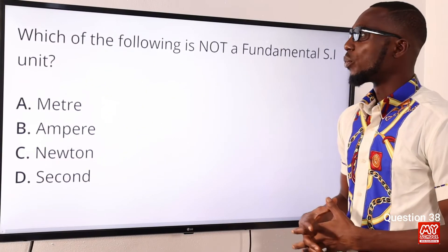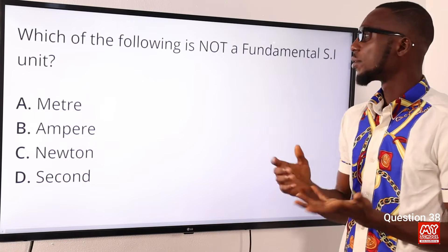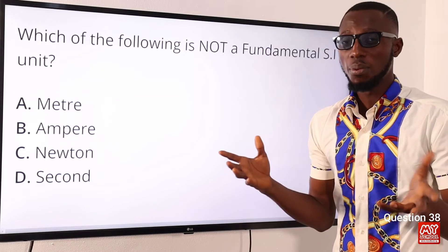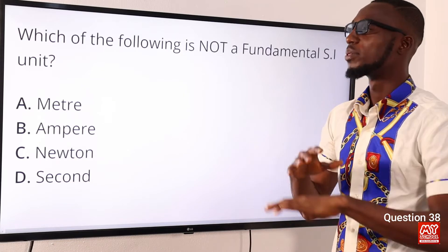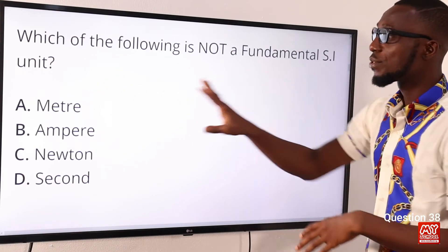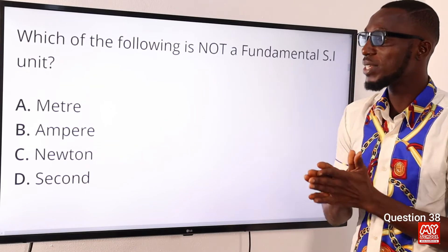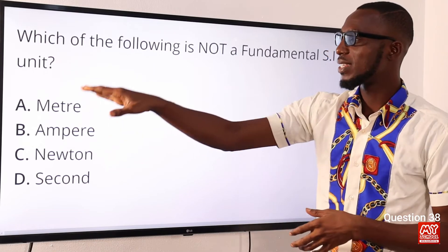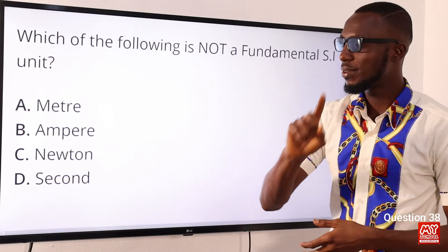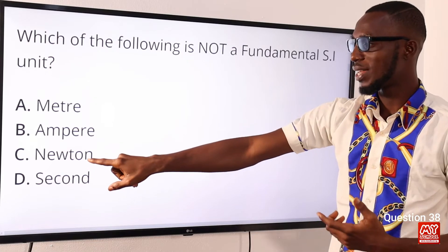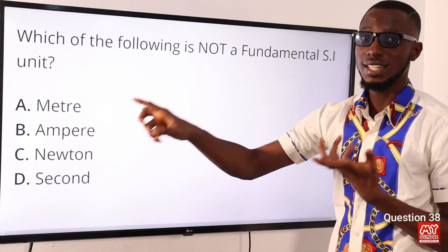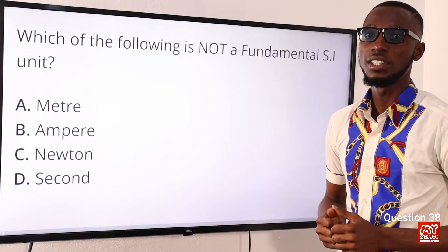Question 38. Which of the following is not a fundamental SI unit? You know, fundamental quantities are the basic quantity upon which all other quantities depend on, in reference to their unit as well. So, fundamental quantities have fundamental units. Unit for length is meter. Unit for electric current is ampere. Unit for force, that's a derived quantity. Mass times acceleration, that is newton. Unit for time, that is second. So, force is a derived quantity. The correct option here is option C for newton.